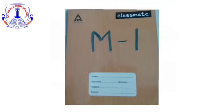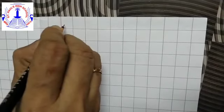So open your books, that is M1 book, and start writing with me. Children, open your M1 book, that is maths book, and start writing along with me.